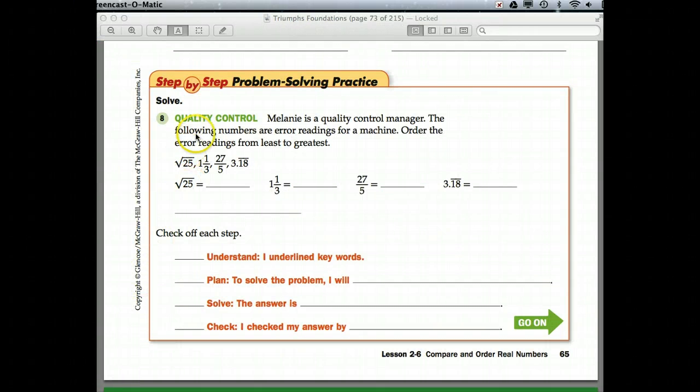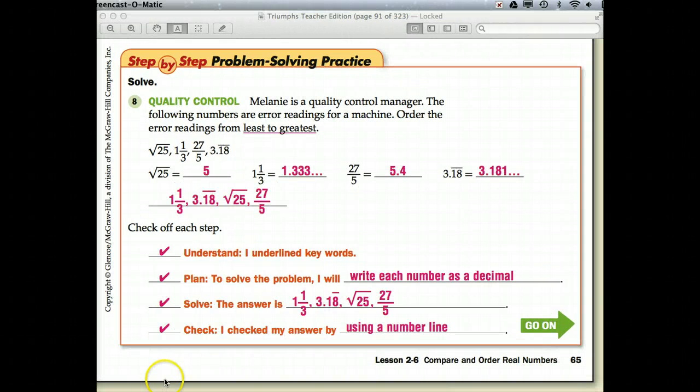Okay, toward the end of the video, we've got our step-by-step problem-solving practice. So, pause the video, read the problem, and you know how to go about changing these to a decimal. Okay, good job, guys. Okay, so we had to change each to a decimal. We know we're going from least to greatest. So, after we wrote them all as a decimal, then the answers. And you can check your answer by plotting them on a number line. So, you can pause the video to finish checking your answers, and then you're ready to work your skills and concepts practice.